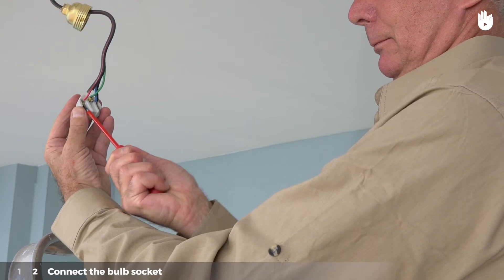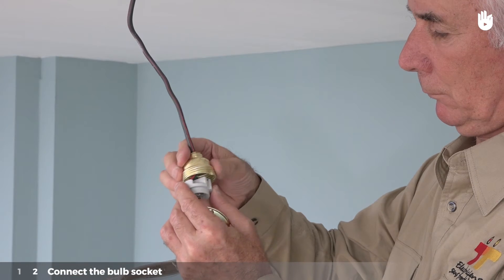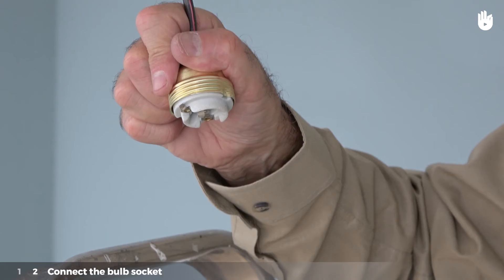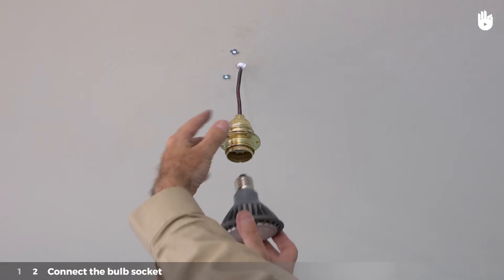Tighten the three screws. Verify that the wires are attached securely by pulling on them. Put the bulb socket back together, positioning the plugs correctly in the ceramic fitting. Screw in the light bulb.